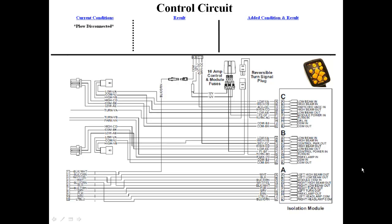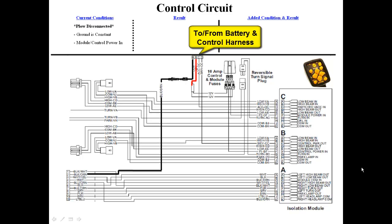The plow is currently disconnected. Ground from the battery runs out to the 11-pin lighting harness on the black-orange wire. 12 volts from the battery runs to the F1 and F2 fuses, which provides power to the control power-in and module power-in circuits of the isolation module.